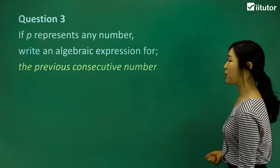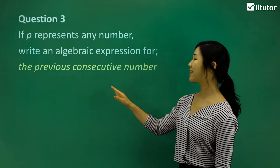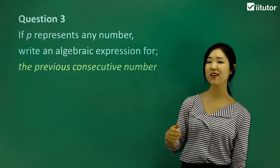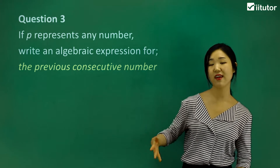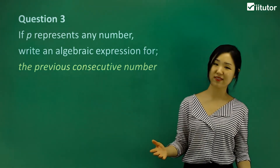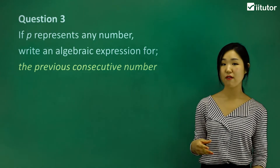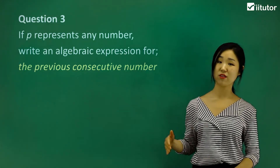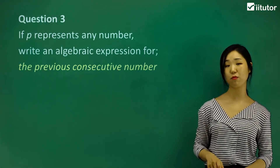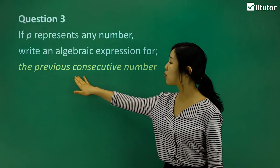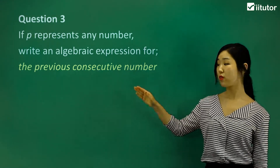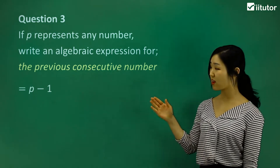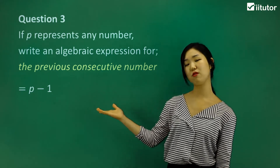Question three: if p represents any number, write an algebraic expression for the previous consecutive number. Consecutive means one after the other — like seven and eight, ten and eleven, twenty-five and twenty-six. The difference between each consecutive number is always one. Previous means the one before, so if p is the number, the previous consecutive number would simply be p minus one.